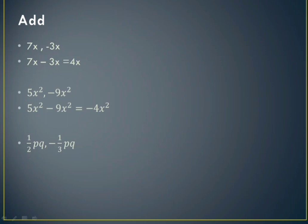Adding them, you get 1/2 p cubed minus 1/3 p cubed. We need to make the denominator the same. The LCM will be 6, so I multiply the first term by 3 to get 3/6, and the second by 2 to get 2/6. So 3/6 minus 2/6 — denominators are the same now, so I subtract the numerators.